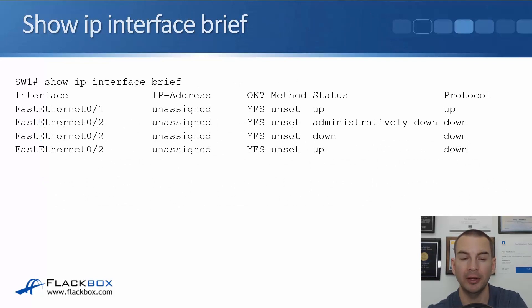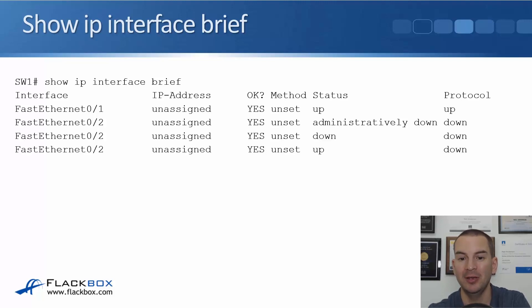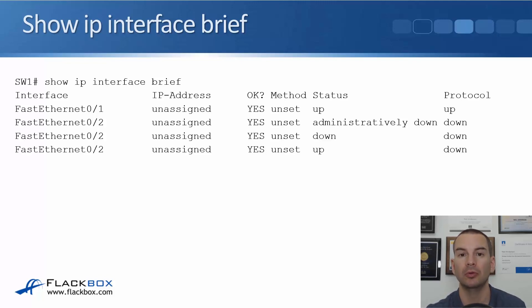Here is an example output of show IP interface brief. FastEthernet 0/1 is up/up, so that is all good. FastEthernet 0/2 is administratively down, so you need to do a no shutdown on the interface to bring it up. FastEthernet 0/2 showing down/down indicates most likely a layer 1 problem — check that it's cabled on both sides and powered on. FastEthernet 0/2 showing up/down most likely indicates a configuration mismatch. Go on both devices, do a show run, and check the configuration on both interfaces either side to confirm there's no mismatch.